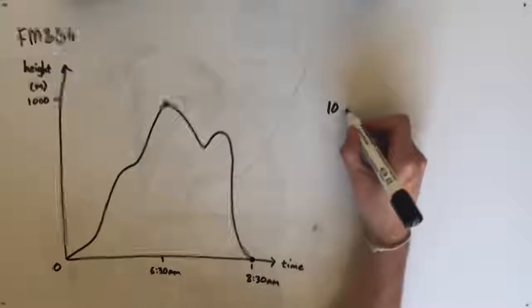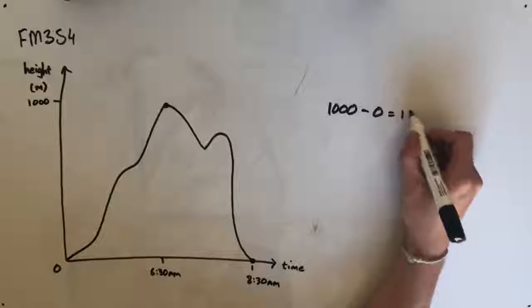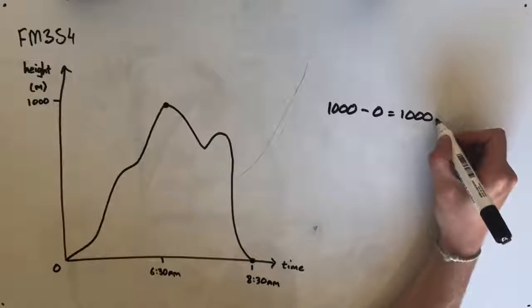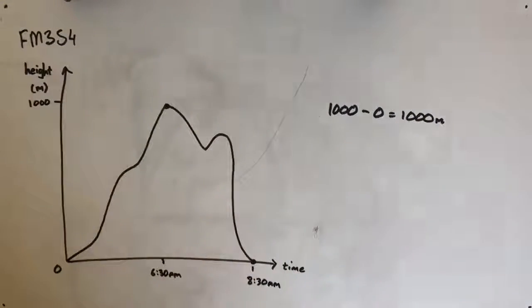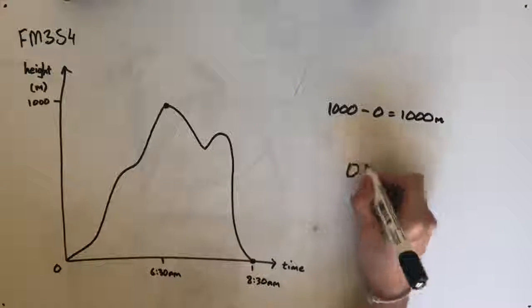So if we find the difference between our 1,000 meters and 0 by subtracting, we should see that the hot air balloon has gone down by, or its altitude has decreased by, 1,000 meters, which makes our answer option D.